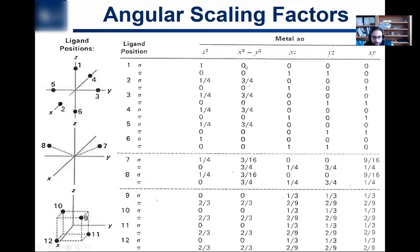But now, look, if you look at the d-x squared minus y squared with position one, zero, because d-x squared minus y squared is a cloverleaf. D-x squared minus y squared is a cloverleaf in the x-y plane, and you're talking about a ligand on the z-axis, you can't have any overlap there. So, if you can't have any overlap, you can't make a sigma bond.